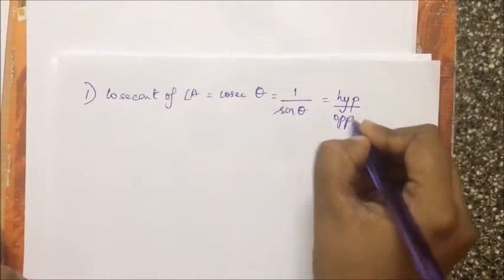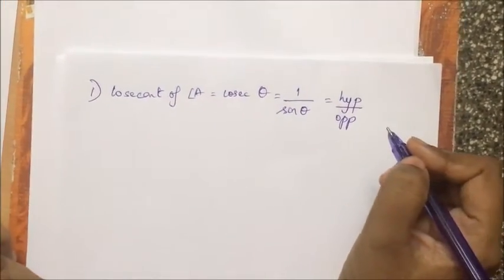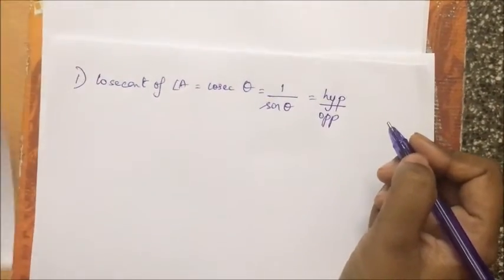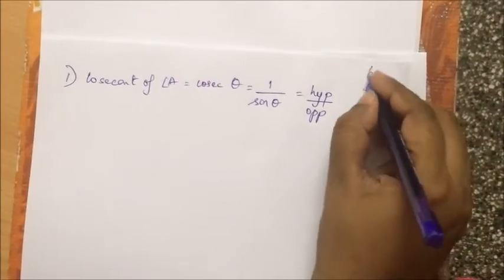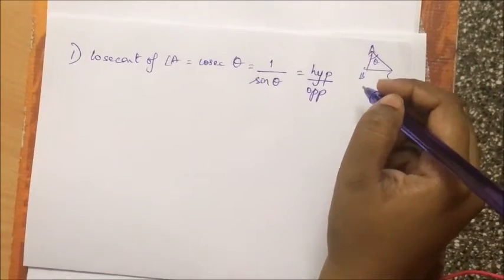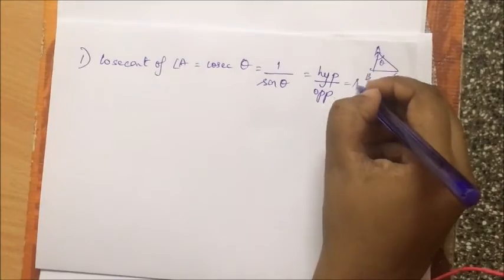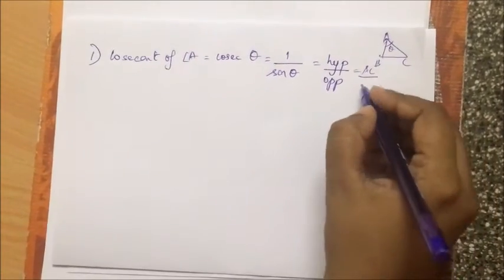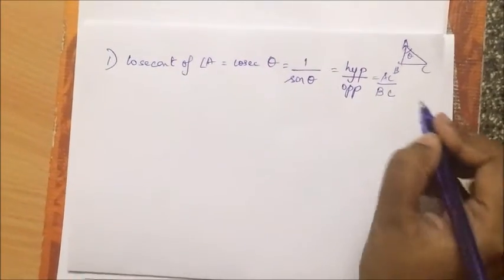I need the diagram again, so let me just quickly draw one here. ABC, angle theta over here. This makes it AC by opposite, which is BC.